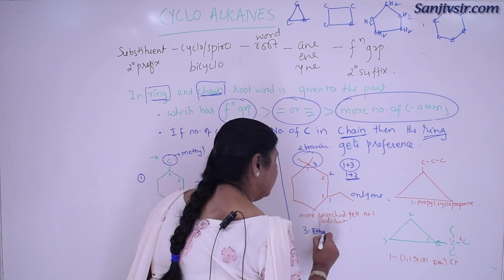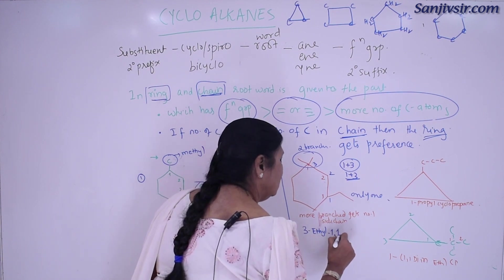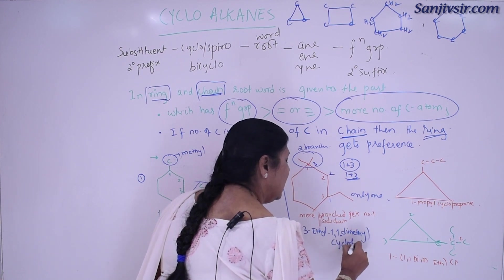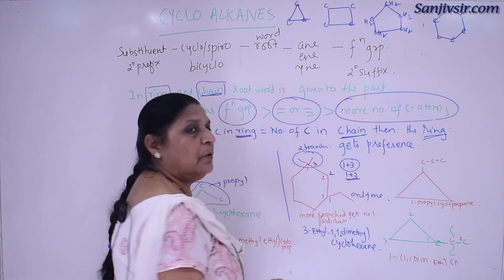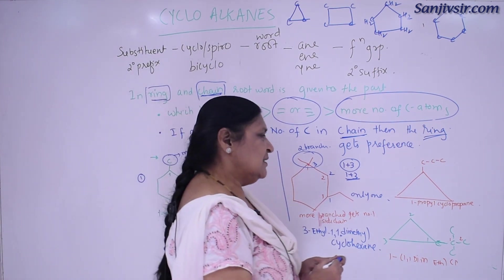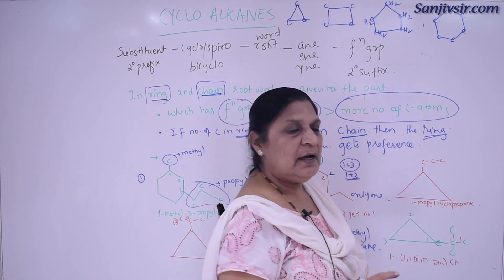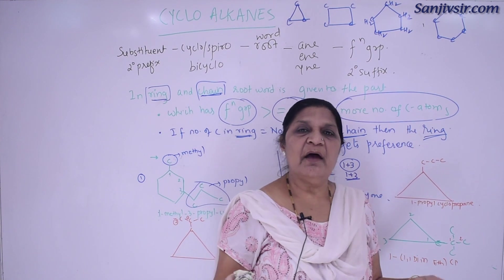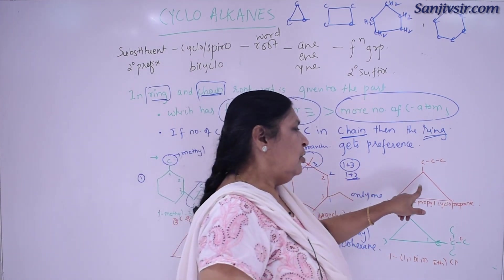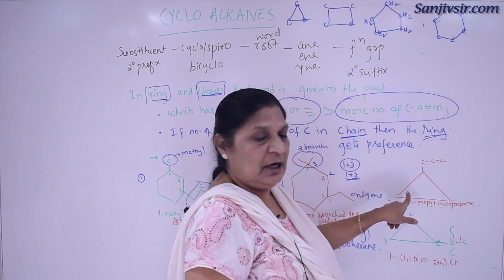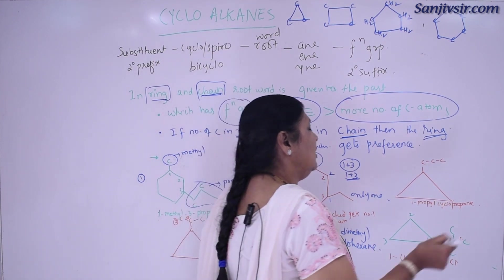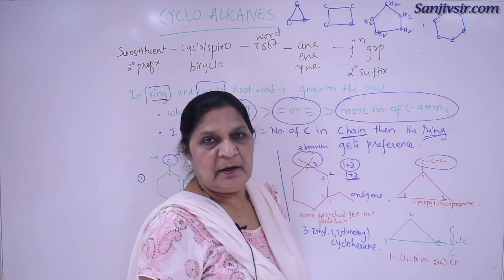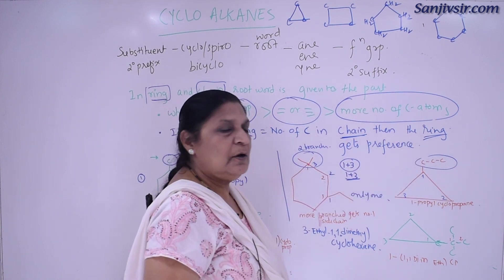So 3-ethyl-1,1-dimethyl-cyclohexane will be the name of this compound. Now come to this example. The ring structure has 3 carbon atoms, and the side chain also has 3 carbon atoms. Both have the same number of carbon atoms. In that case, you give preference to the ring. Therefore this ring will be the root name, and it will be 1-propyl-cyclopropane.